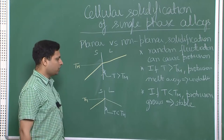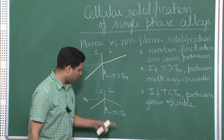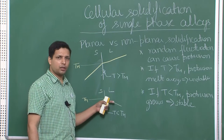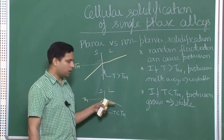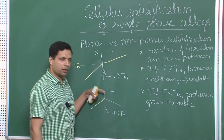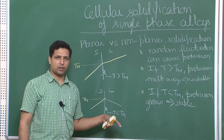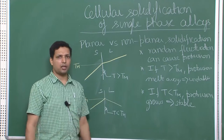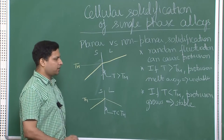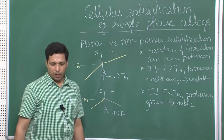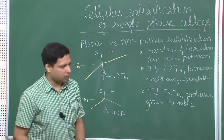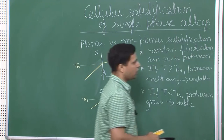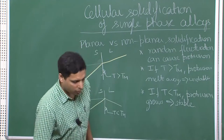This is what is called thermal undercooling — there is a temperature lower than the melting point. The thermal gradient is basically negative, and because of that the protrusions are stable. But there is something similar that happens in alloys and it is called constitutional supercooling.